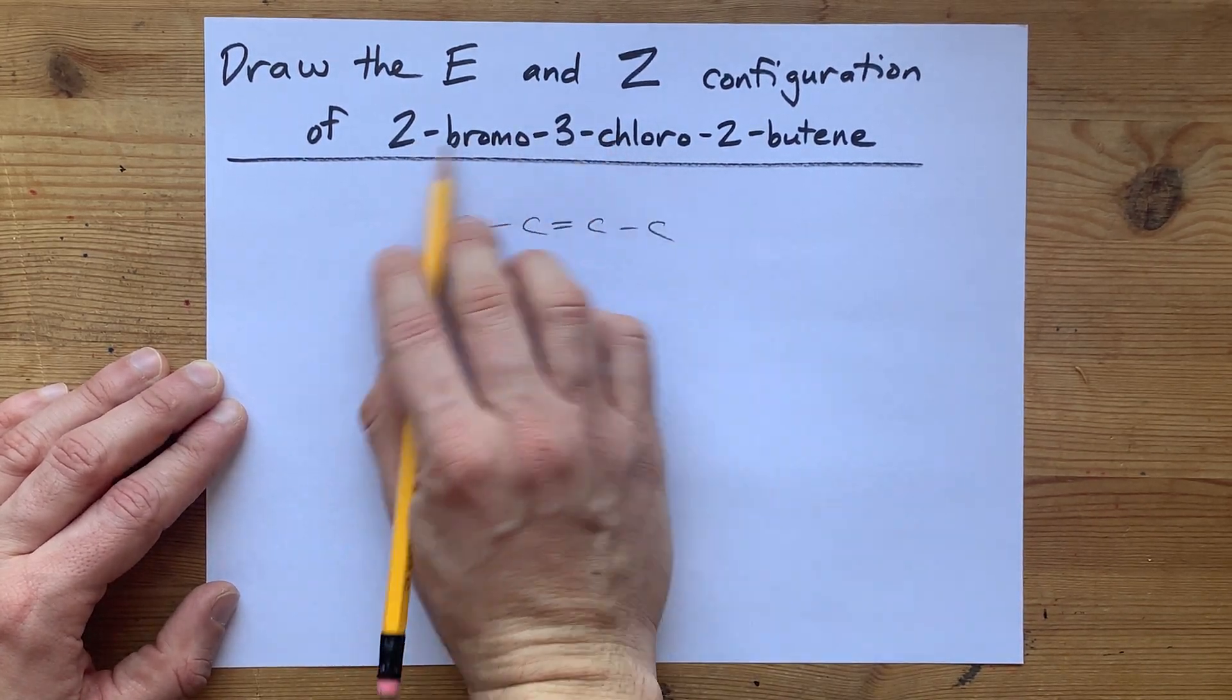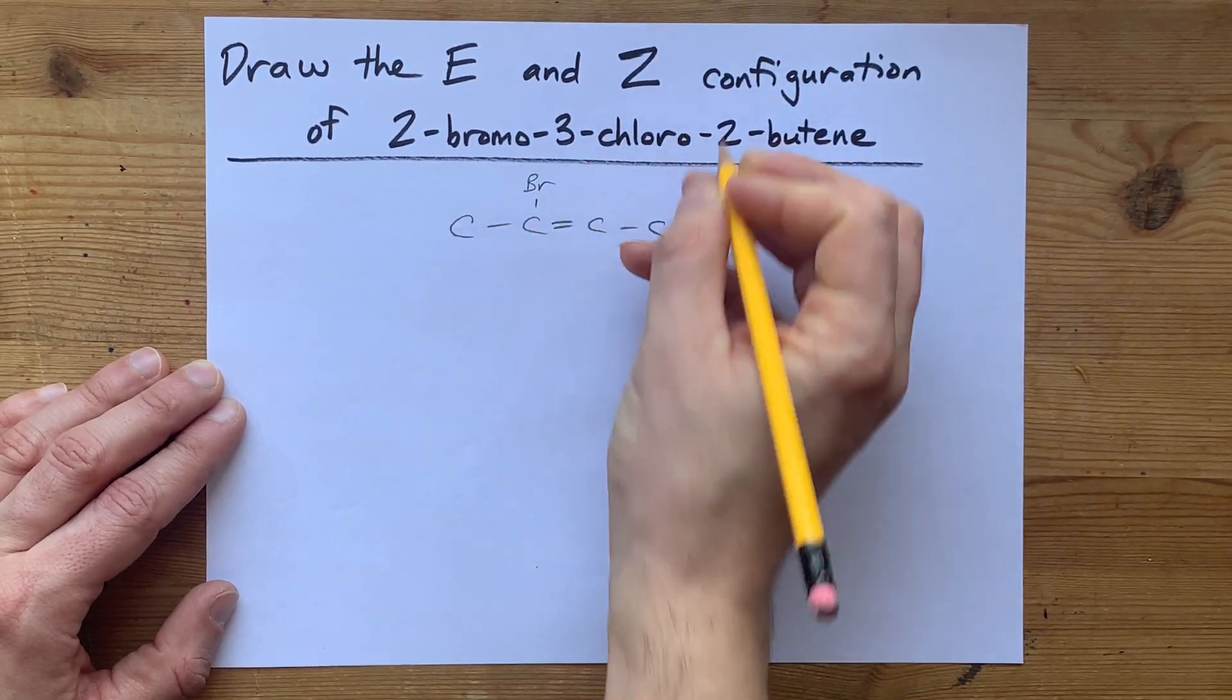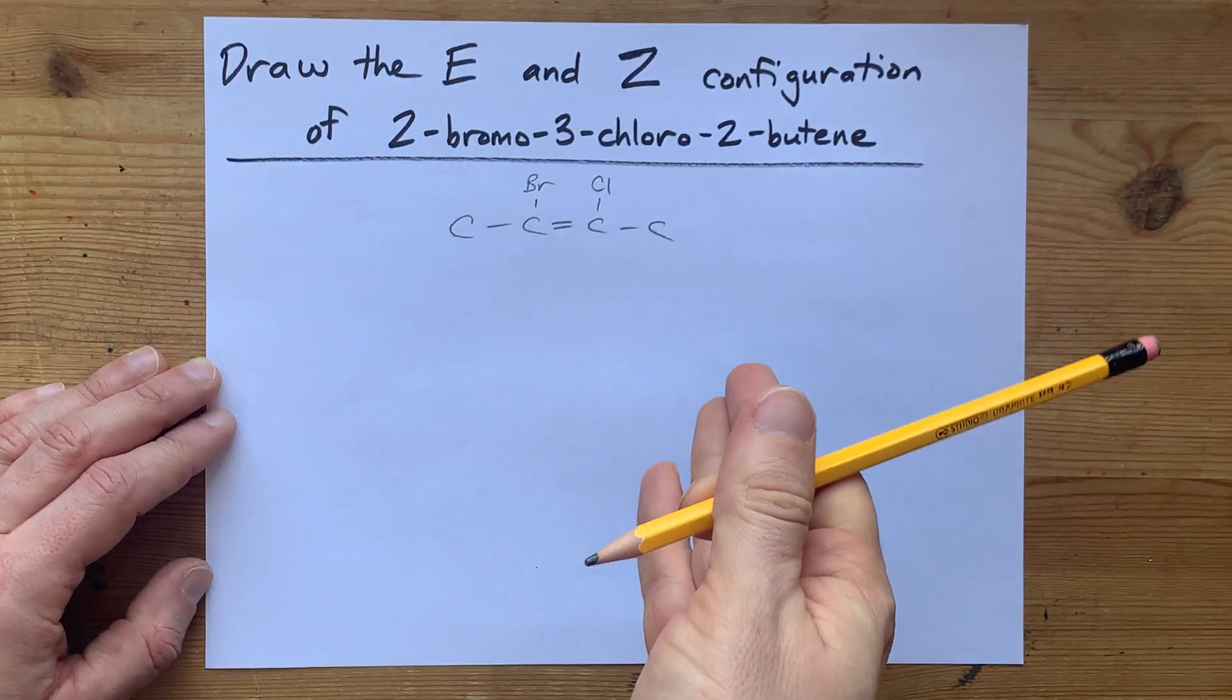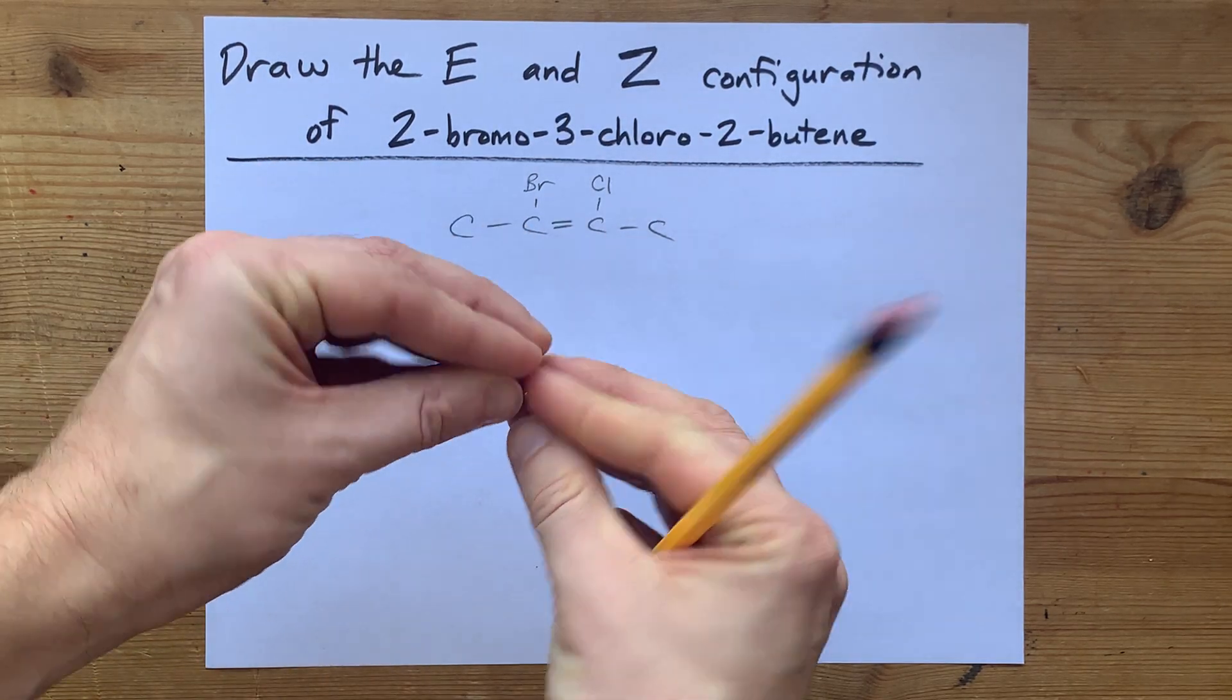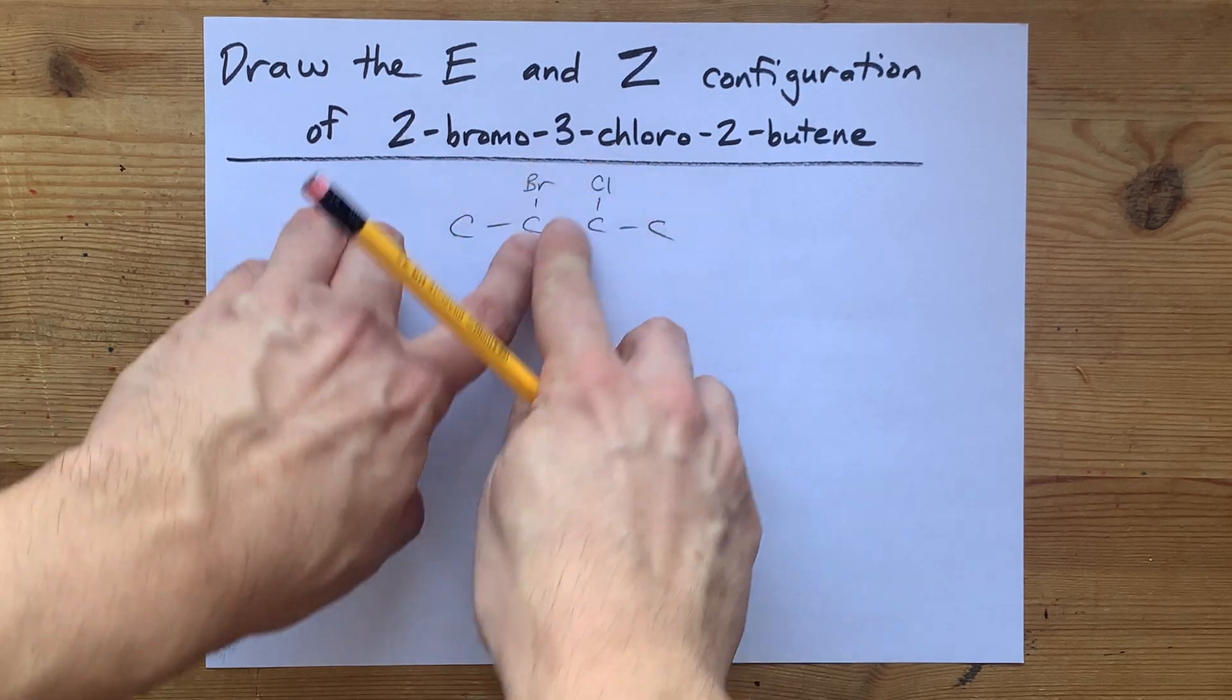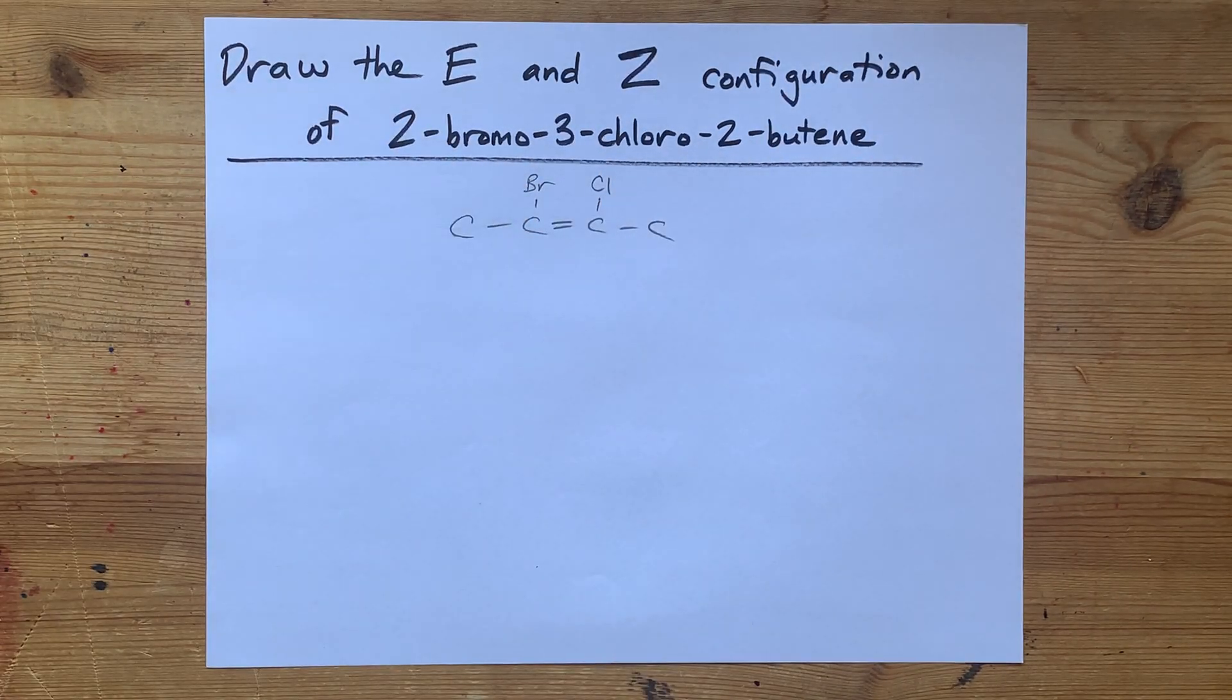Now I also have some substituents here. I've got 2-bromo and 3-chloro. Now I do see why there are isomers here. We have a double bond, and you can't rotate around a double bond. So whether I drew the Br and the Cl on the same side of the double bond is different than if they were on opposite sides of the double bond.